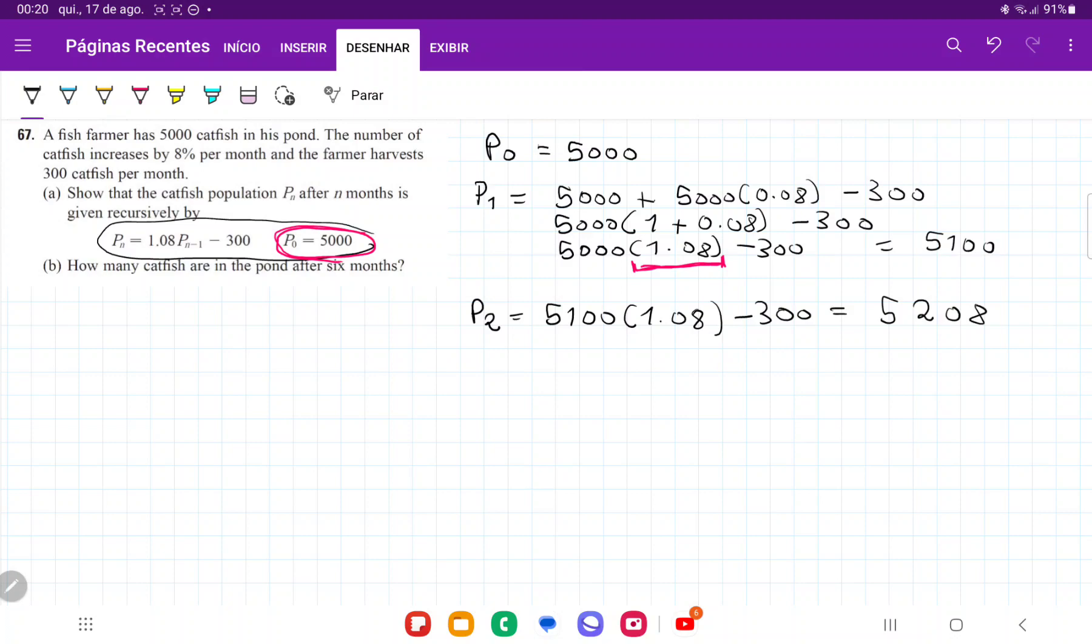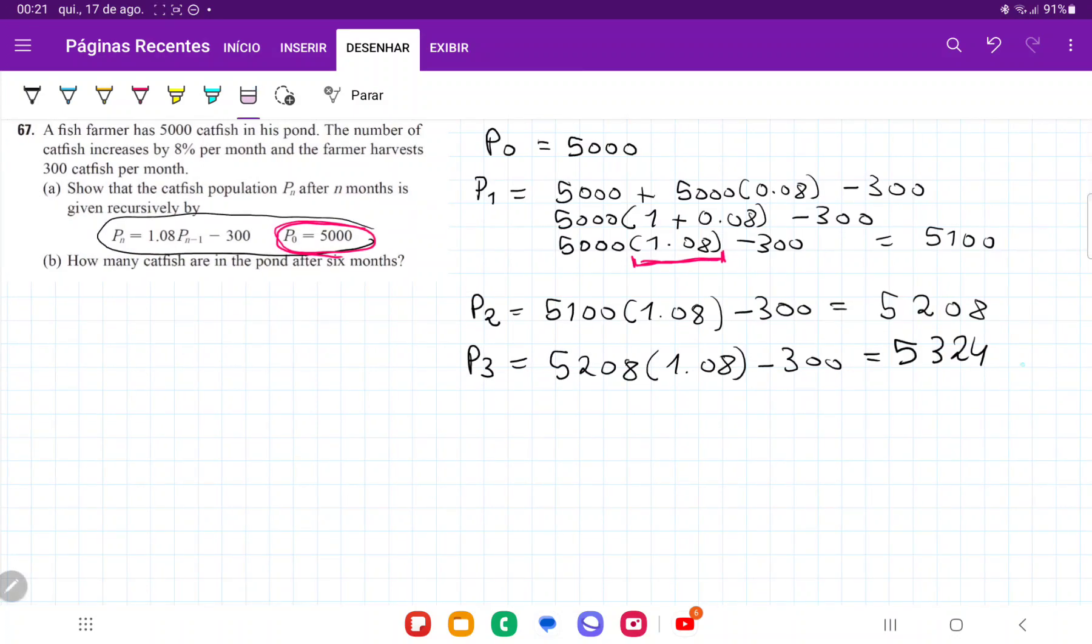That is how many catfish he has. So once we're here, let's think about P3. Well, P3, now the new population is going to be 5,208. And once more, we are going to multiply it by 1.08, because that means that it's growing by a hundred percent, itself plus 8%. And then minus 300. This is going to give us 5,208 times 1.08 minus 300. That is going to give us 5,325. Now actually, this one is 24.6. So we're just going to round up because we can't have a portion of a catfish.